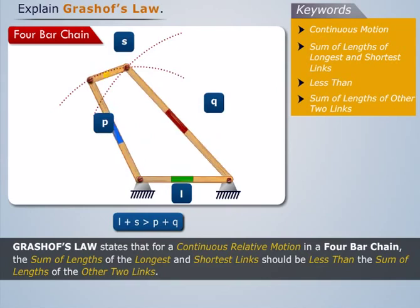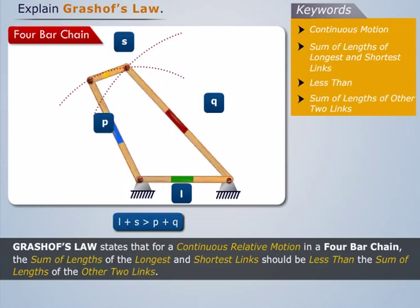Thus we can say that a four-bar chain which follows Grashoff's Law of Motion will always execute continuous relative motion. Note that Grashoff's Law is applicable only for a four-bar chain.